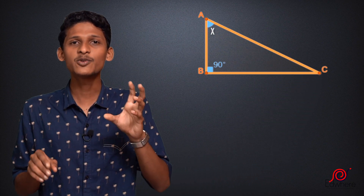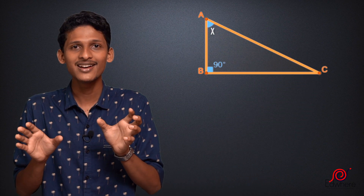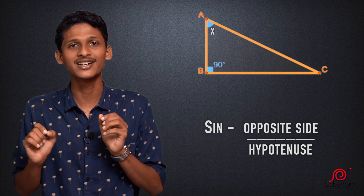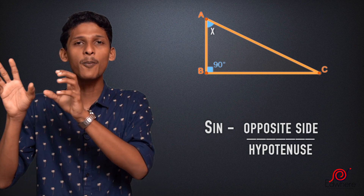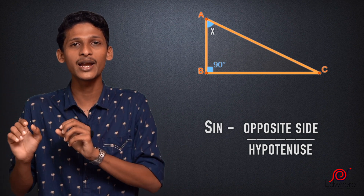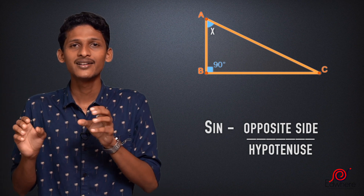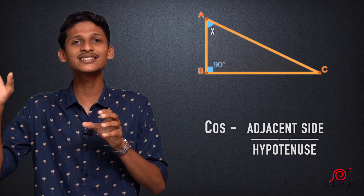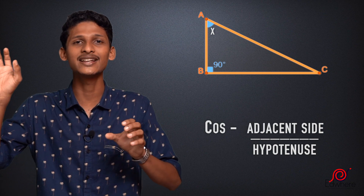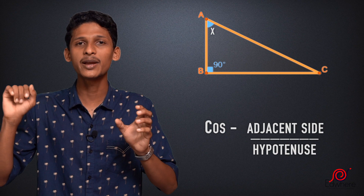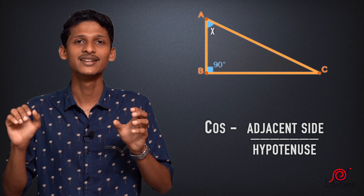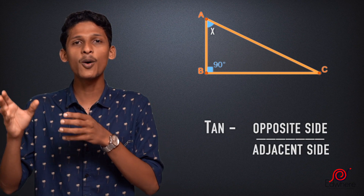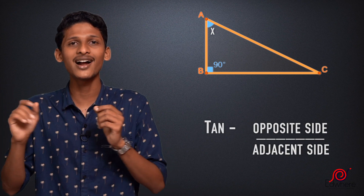Now, there are formulas. What is the formula for sin? The formula is opposite side divided by hypotenuse. What is the formula for cos? It is the adjacent side divided by hypotenuse. What is the formula for tan? It is the opposite side divided by the adjacent side.